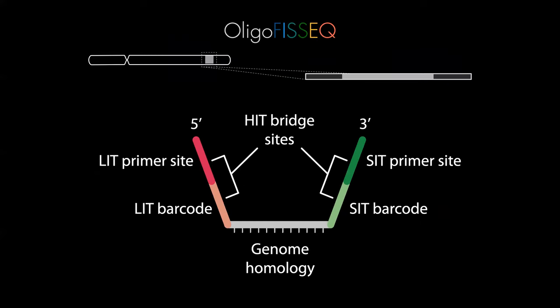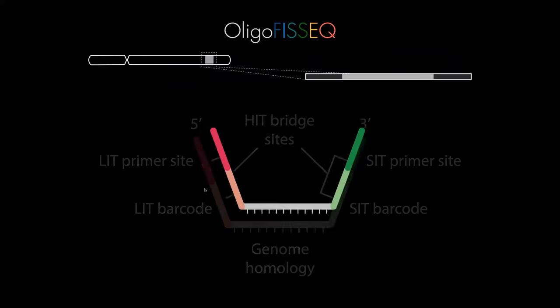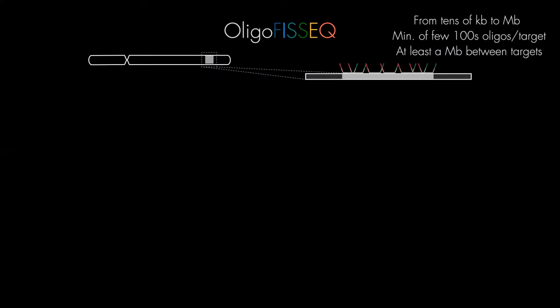OligoPhysic is the work of Huy and Xiamantanu in the WU lab, and David in our lab. We again have oligos on a particular region of interest based on genome homology, but now the probes are more complicated — they are designed so you can sequence those probes under the microscope. That's the in-situ sequencing part, which is why it's called OligoPhysic. The oligos go into particular regions ranging from tens of kilobases to megabases in size, with a minimum of a few hundred oligos per target, and about one megabase separation between targets to differentiate the signal. This is wide-field, not super-resolution, which is why you can image larger numbers of cells faster.